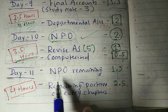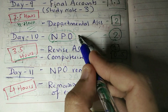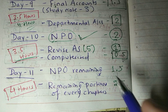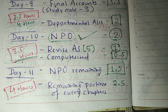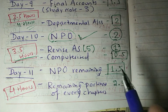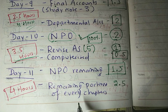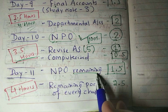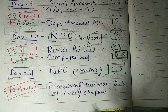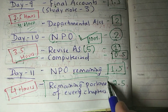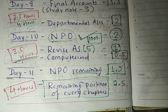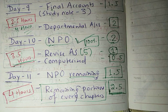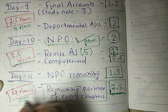On Day 11, whatever remains from NPO — because I know it's a big chapter and many students can't finish it in 2 hours — you pick that up again and also revise NPO, since it is a chapter from which a sure-shot question always comes. This will take 1.5 hours for NPO completion and 2.5 hours for revision, making Day 11 a total of 4 hours.